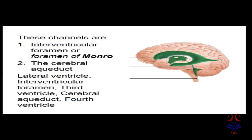These connecting channels are: first, the interventricular foramen or foramen of Monroe, which connects the lateral ventricle with the third ventricle — there are two interventricular foramina by which both lateral ventricles are connected with the third ventricle. Then comes the cerebral aqueduct, which connects the third ventricle with the fourth ventricle. Below the fourth ventricle is the central canal and the spinal cord.